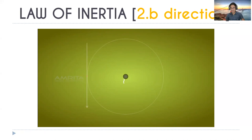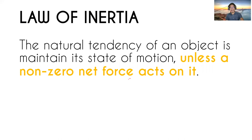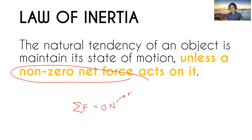So we have two parts of the law of inertia. First: when an object is at rest, it will remain at rest. Second: when it is in motion, it will remain in constant speed and constant direction. This is what happens when there is no net force — net external force equals zero newtons — the object either remains at rest or remains in constant motion.